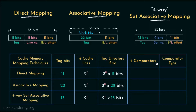Now let's talk about how many comparators are needed for different mapping techniques. For direct mapping, it's a very strict mapping policy and we compare only a single cache line at a time, so we need only 1 comparator. In associative mapping, due to its flexible nature — no restrictions on placing main memory blocks into cache lines — we need 2 to the power 11 comparators, one associated with each cache line. For 4-way set associative mapping, since every set has 4 lines, we compare only 4 lines belonging to the same set during block identification, so we need 4 comparators.